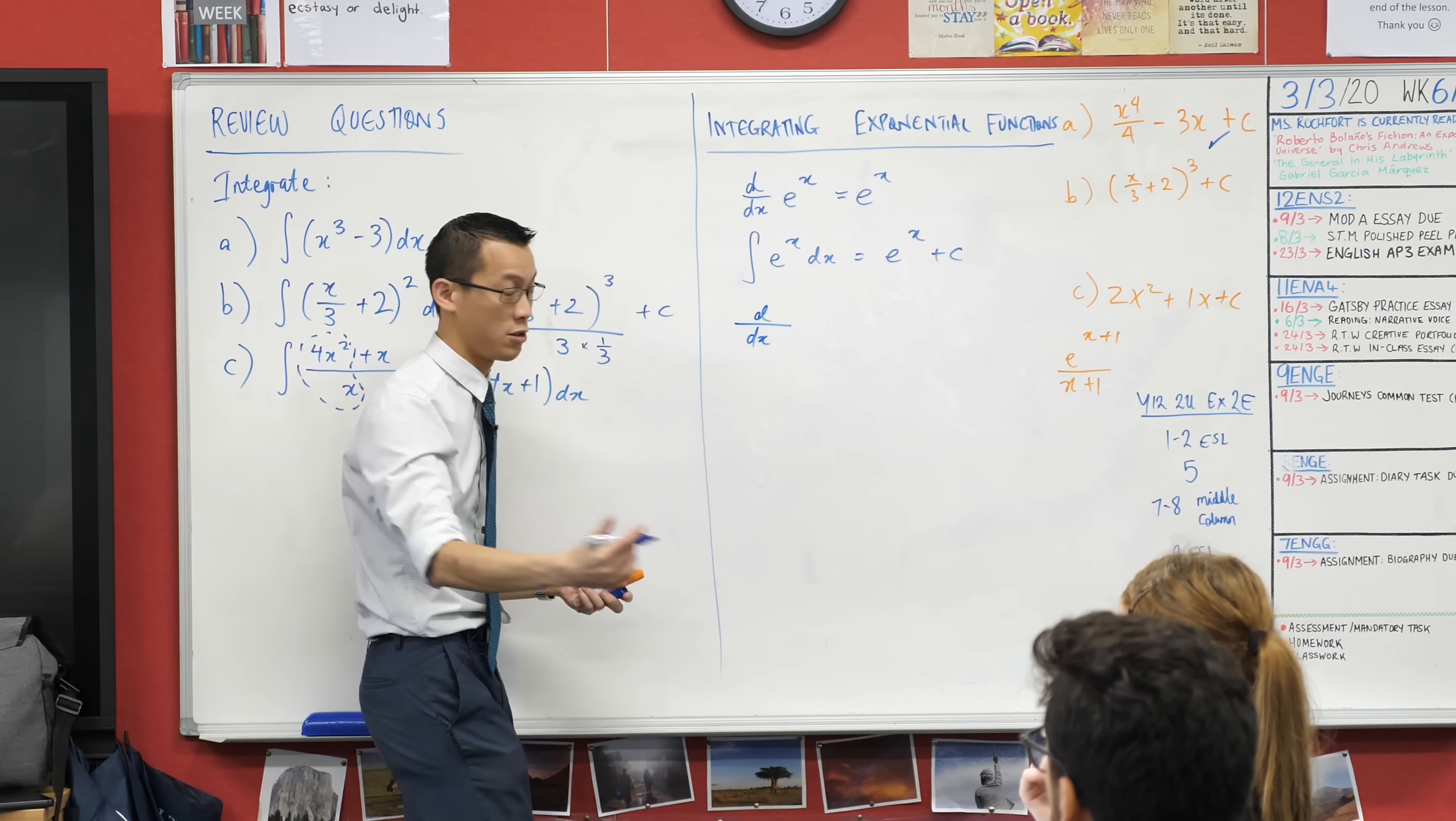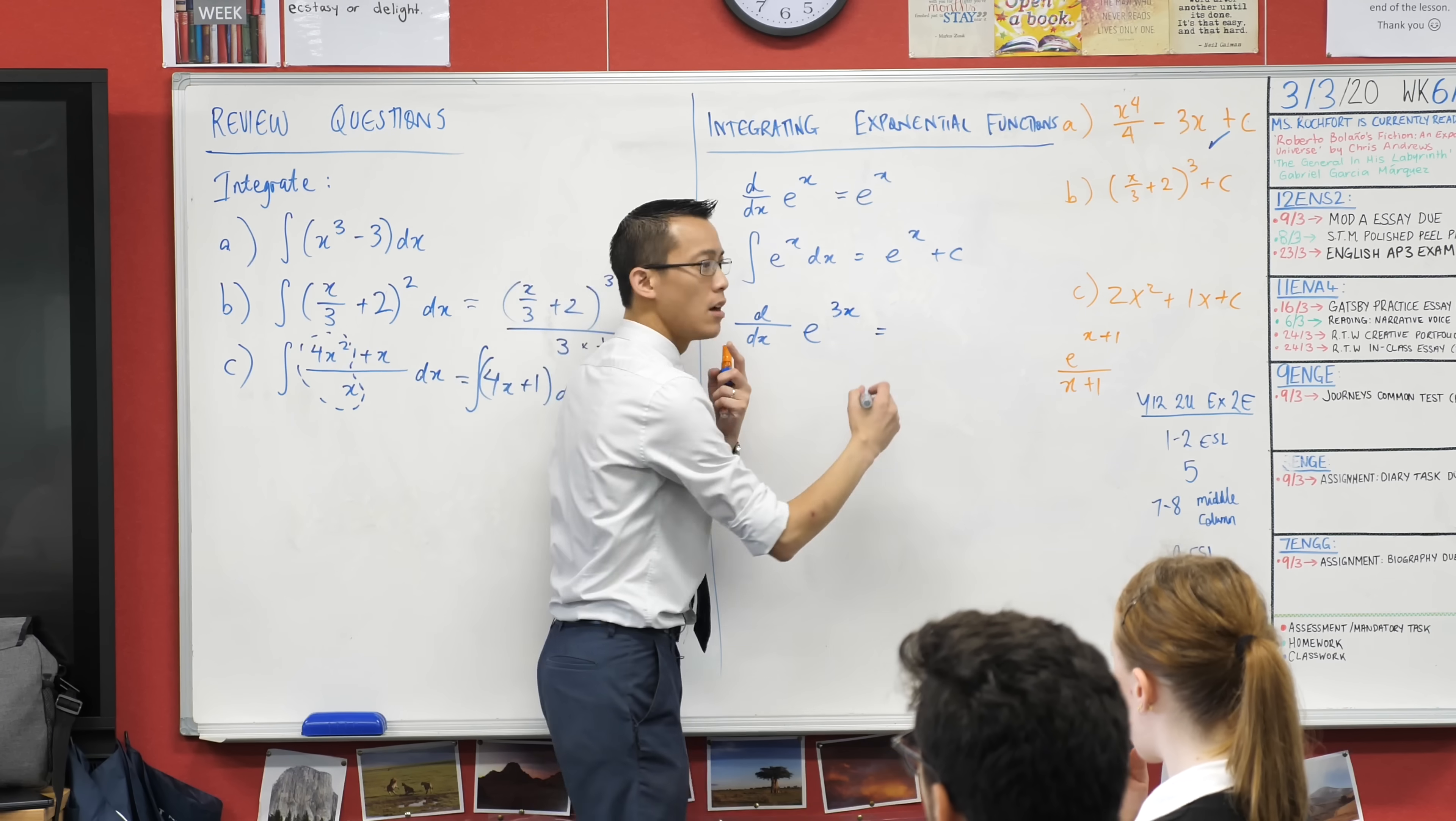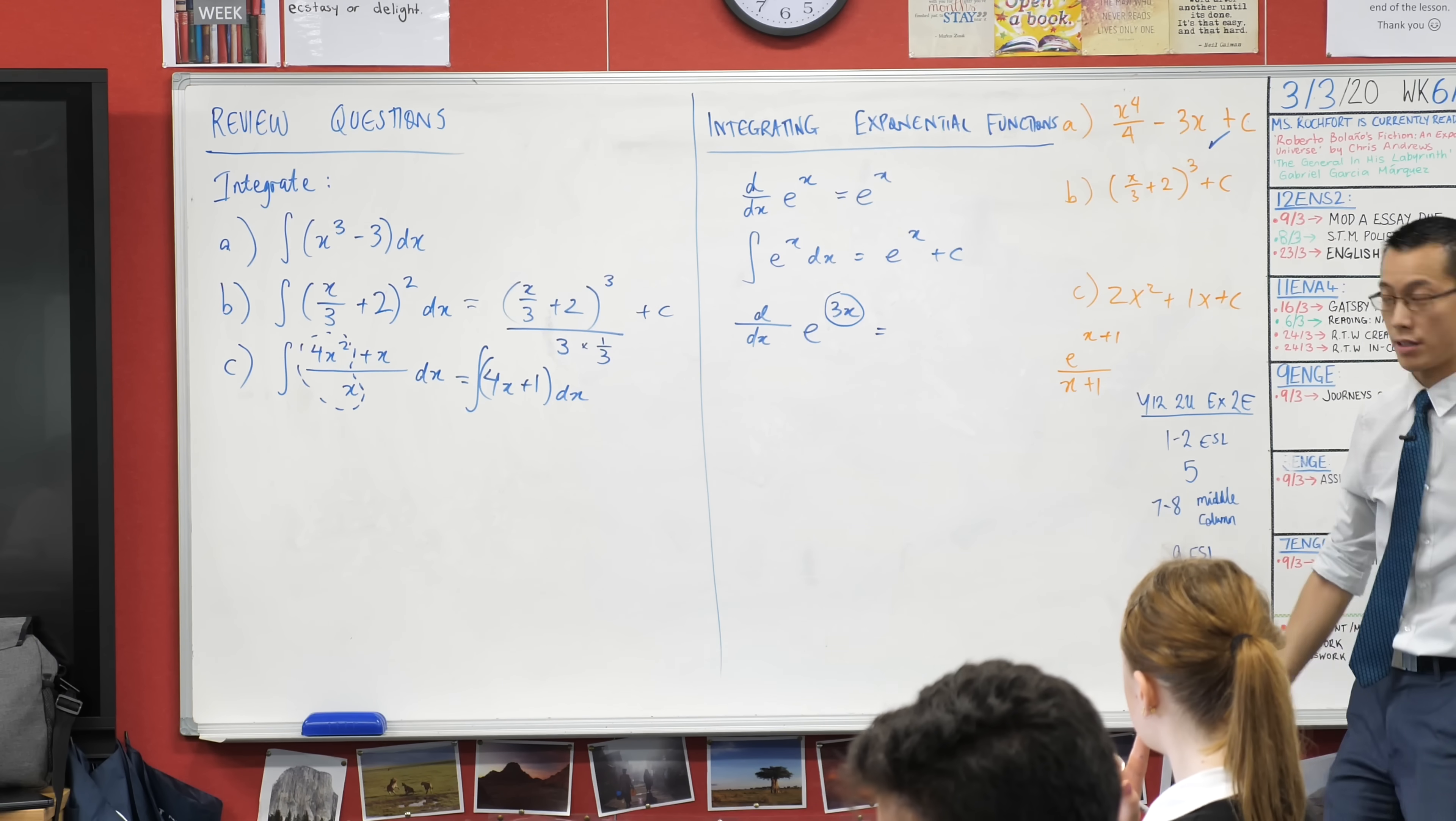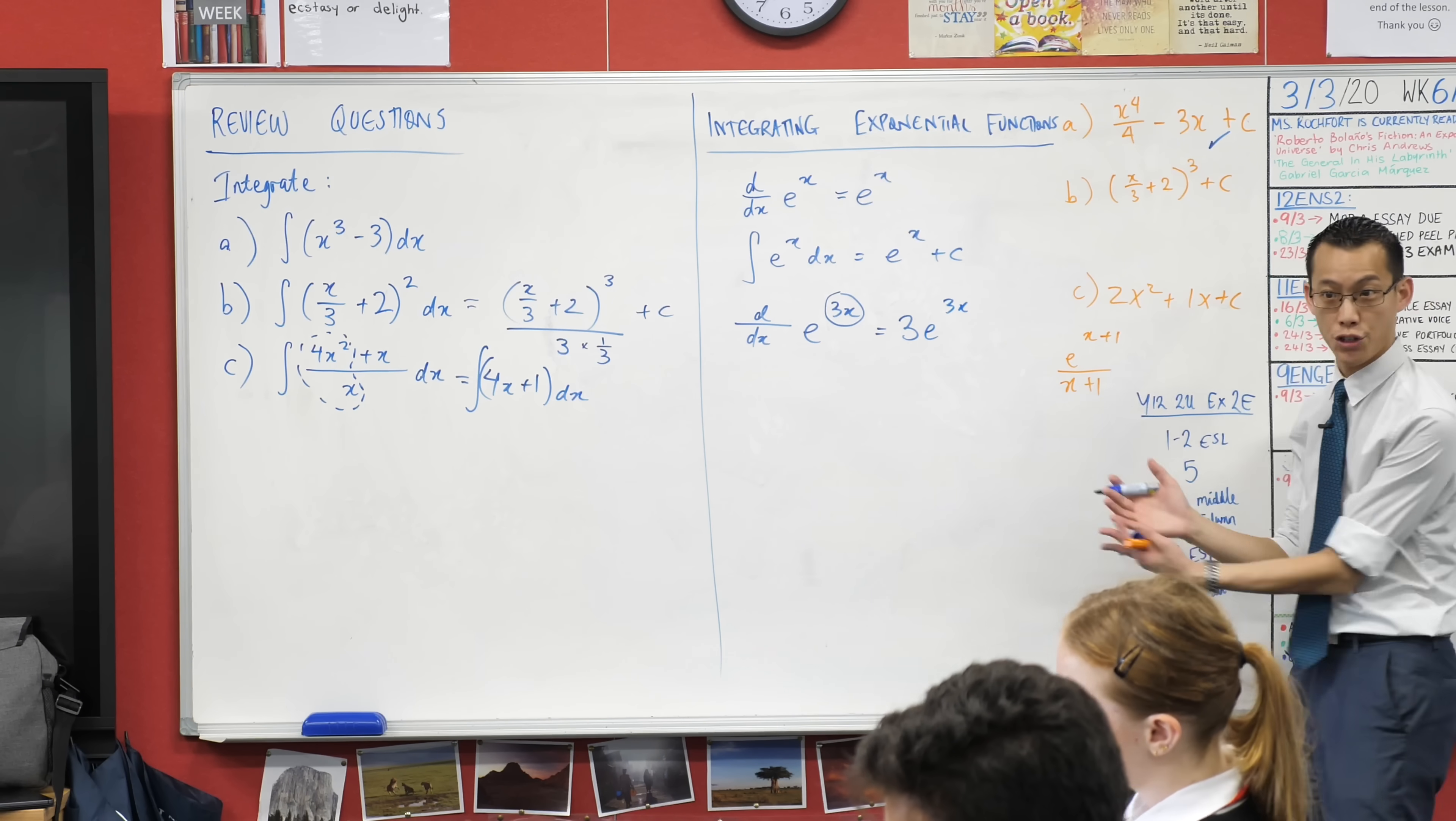So you're doing again inside and outside. It's just the inside is up there in the index, so its derivative, as Serene said, is 3. I've differentiated that part, and now I do the outside. It's just an e to the power of, it's an exponential. You just hand back that exponential.